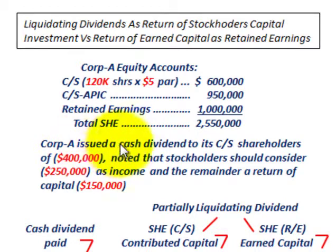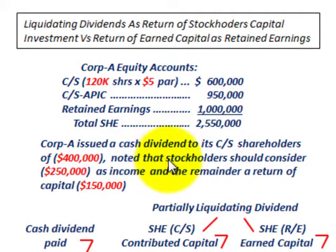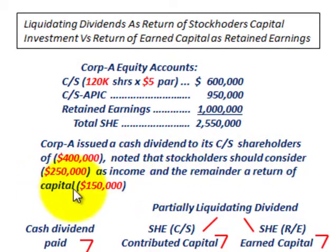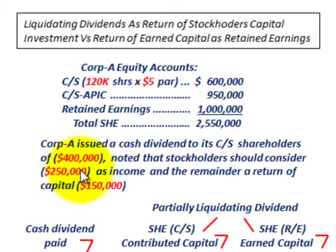Corporation A issued a cash dividend to its common stock shareholders of $400,000. They stated to their stockholders that $250,000 should be considered as income and the remainder, $150,000, as a return of capital to the stockholders. So common stockholders get $400,000 total, split between $250,000 as income and $150,000 as return of capital.